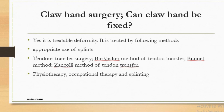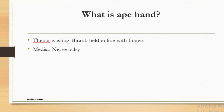Regarding surgical correction of claw hand: first, appropriate splints should be used to stretch the deformity. If conservative treatment is unsuccessful, tendon transfer surgery can be performed — such as the Burkhalter method, Bunnell method, and Colle method of tendon transfer. Post-operatively, physiotherapy including splinting may be required.